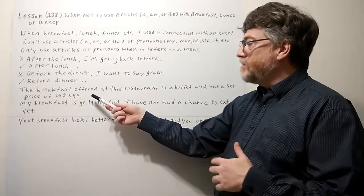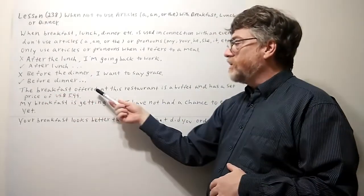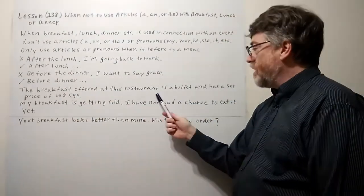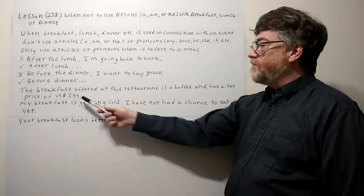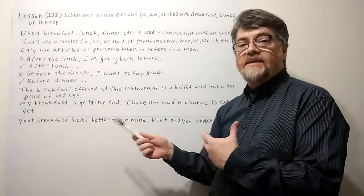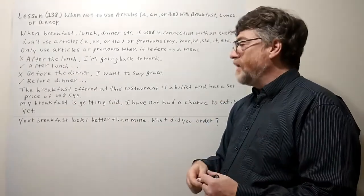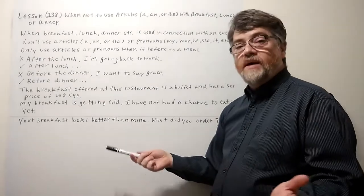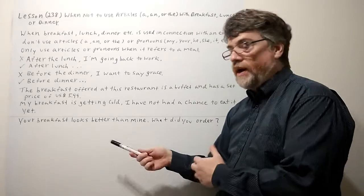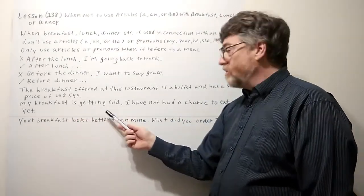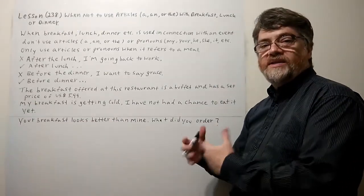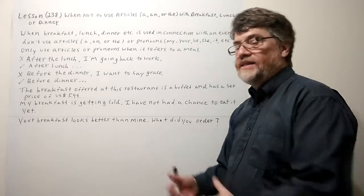Now let's look at examples where we do use articles or pronouns because the word actually refers to a meal. 'The breakfast offered at this restaurant is a buffet and has a set price of $5.99.' Here's another one: 'My breakfast is getting cold. I have not had a chance to eat it yet.' Clearly it refers to a meal in this situation.